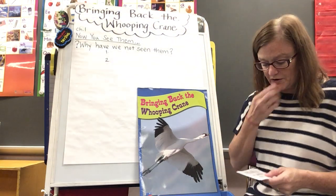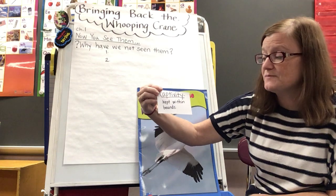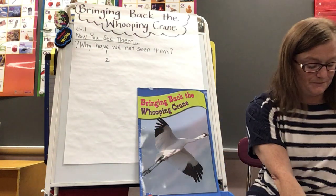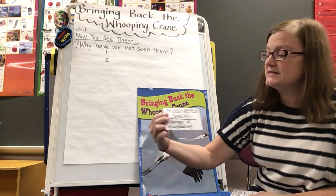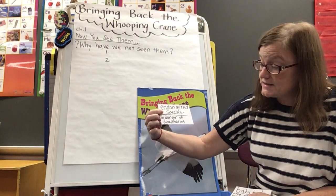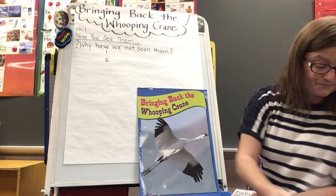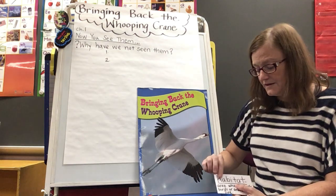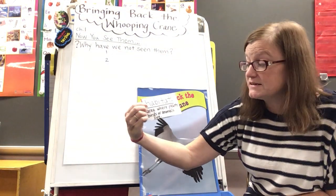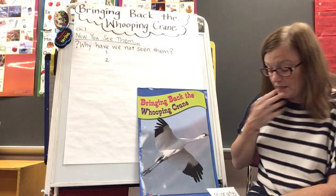The first word is 'captivity,' and captivity is where something is kept within a certain bound or a certain area. The next word is 'endangered species,' and an endangered species is something like an animal that is in danger of disappearing. The next word is 'habitat,' and habitat is an area where plants, birds, or animals live.